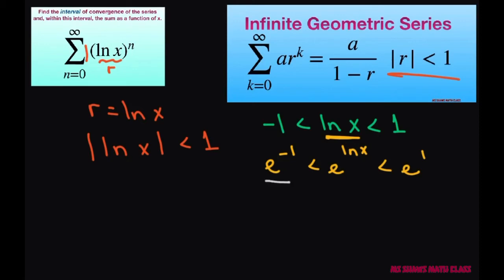Now this just equals 1 divided by e and e to the power of ln of x is just x is less than e.